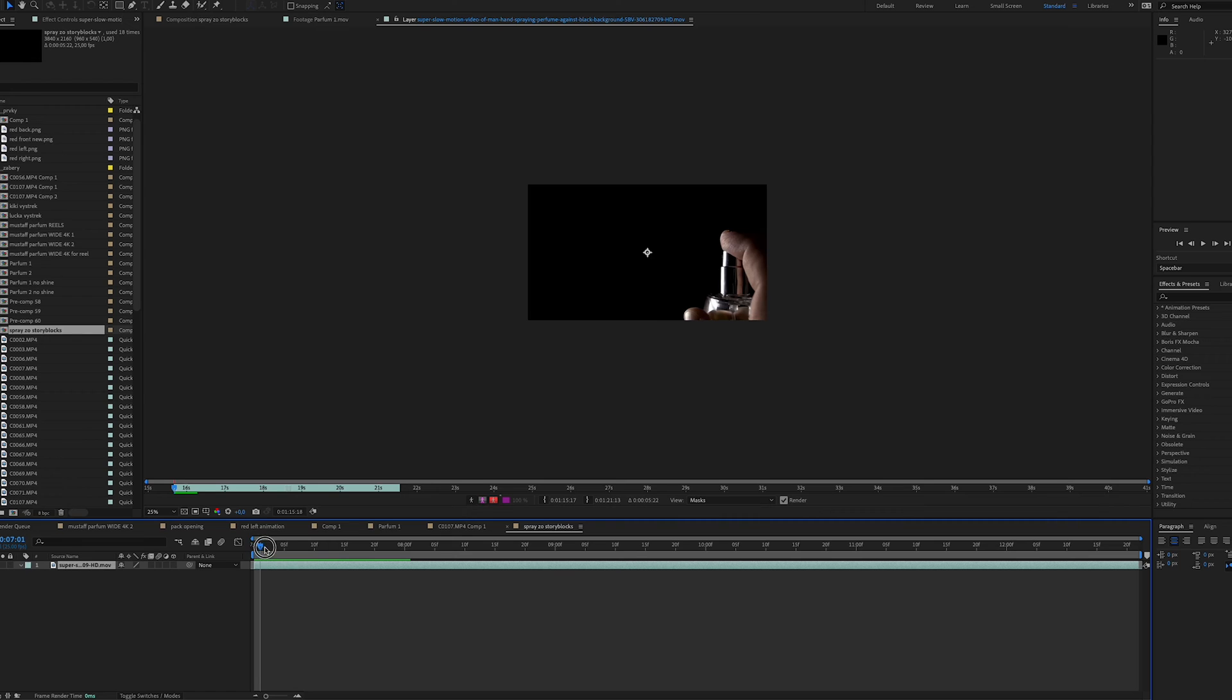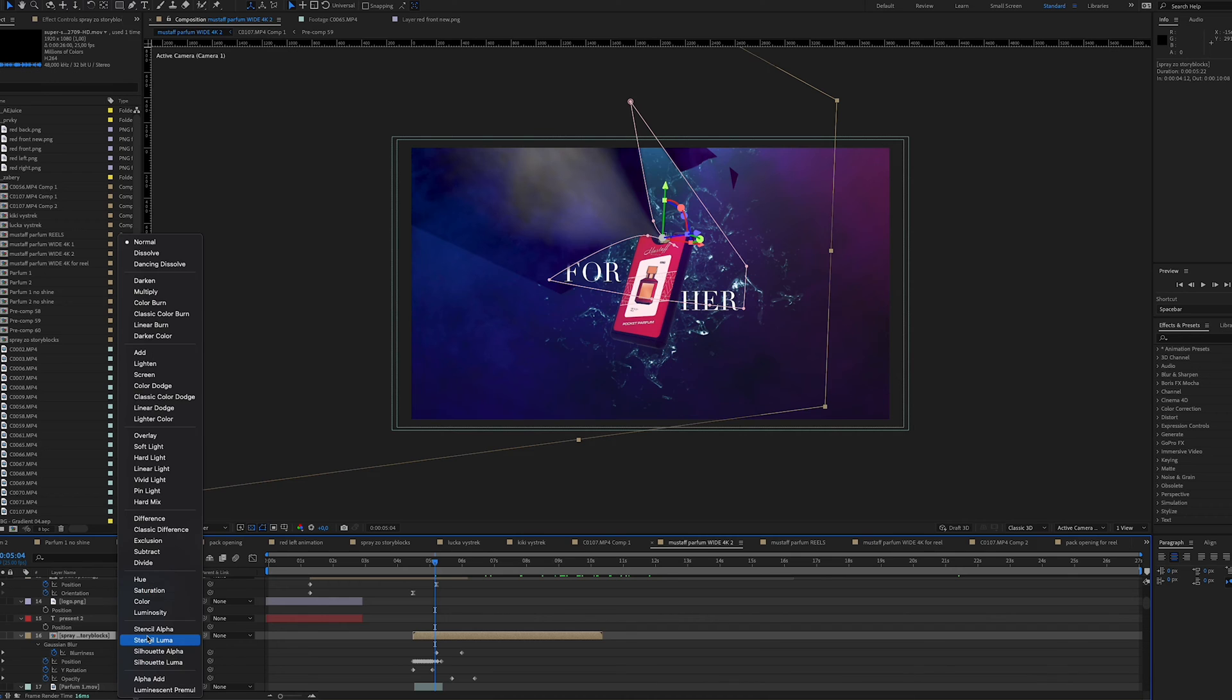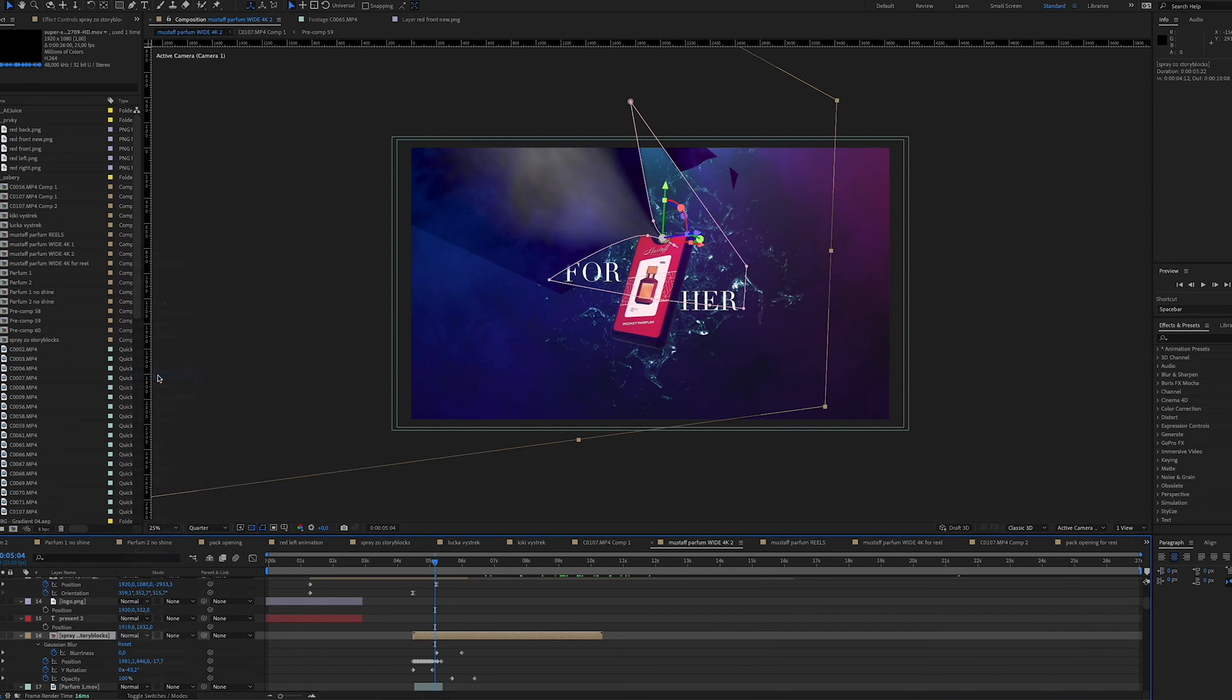For the spray effect I download the footage from storyblocks.com which is captured in super slow motion. The clip is captured on black background so basically I just mask out the part I don't want to see and then apply the screen effect to remove the background and position it where I want it to be. And this is basically the opening shot.